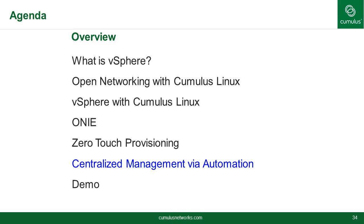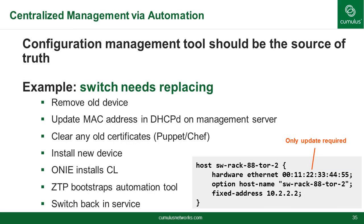The last concept before we go into the demo is automation. We're trying to build the small blocks — from vSphere, Cumulus Linux, ONIE, ZTP — to bring everything all together. Automation is a different approach than traditional configuration, where the configuration management tool should be the source of truth. To show how easy it would be if a switch needs replacing: you remove the old device, update the MAC address, clear any old certificates using Puppet or Chef, install the new device, ONIE installs Cumulus Linux, ZTP bootstraps the automation tool, and the switch is back in service.